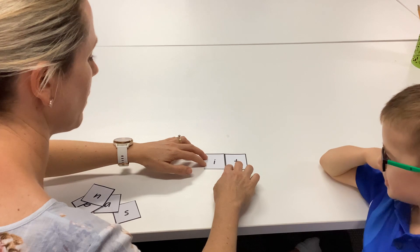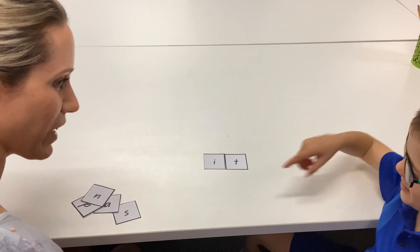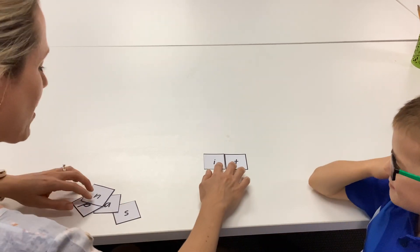Can you try this word for me? It, it. Beautiful blending. You forgot to use your little pointer finger. Can you try it? It, it. Amazing. So that word was it. Good job.